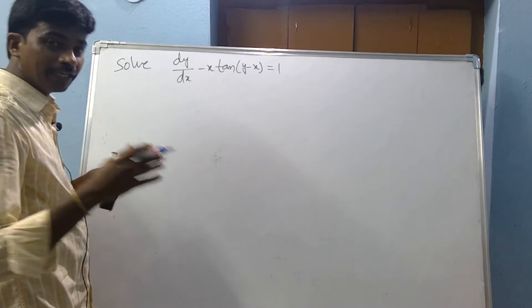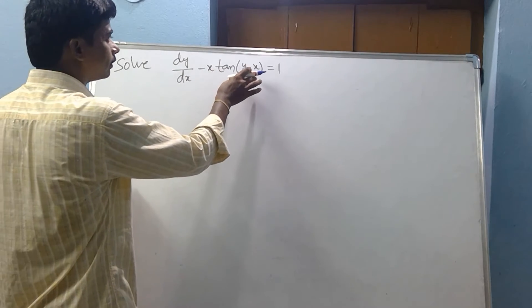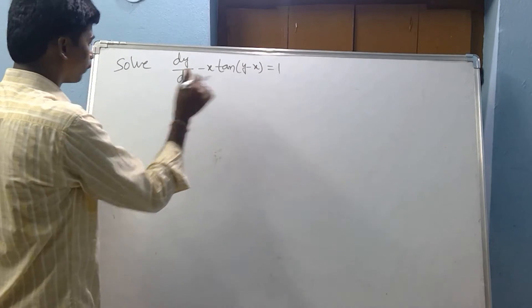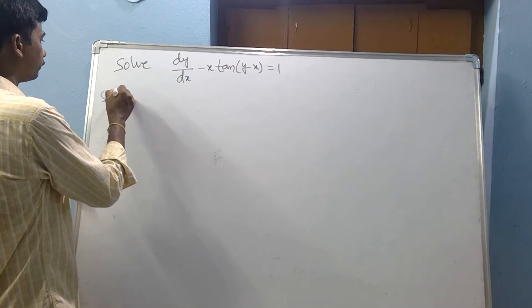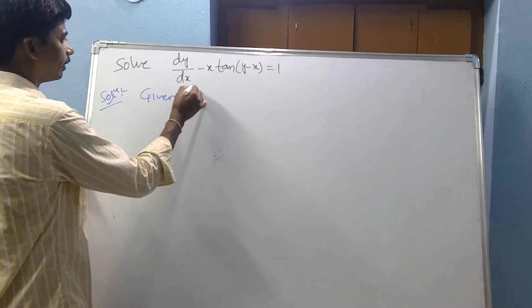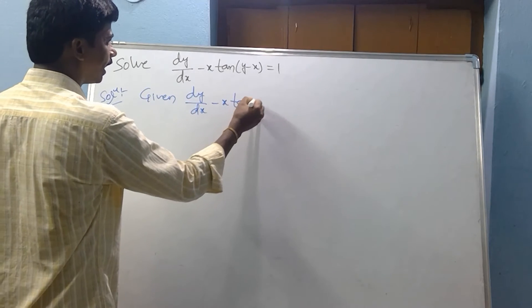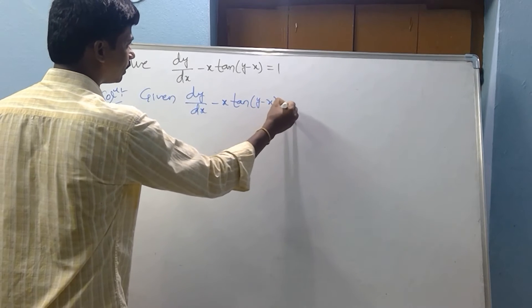We are using variable separable and substitution method. Solution: given dy/dx minus x tan(y - x) equal to 1.